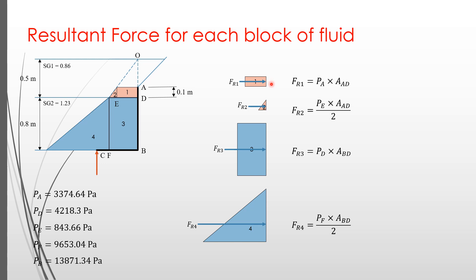With the same analogy, FR2 represents the pressure volume of a wedge formed by triangle 2 and the area of the surface AD. The same, FR3 represents the pressure volume of a rectangular box formed by rectangle 3 and the area of the surface BD. And finally, FR4 represents the pressure volume of a wedge formed by triangle 4 and the area of the surface BD.